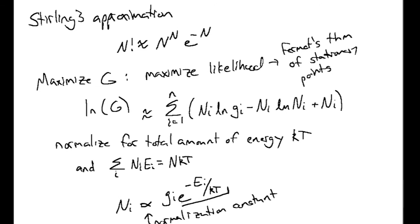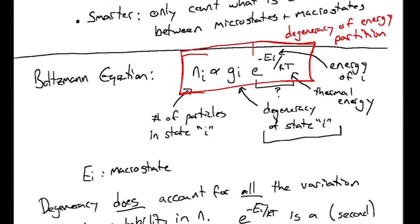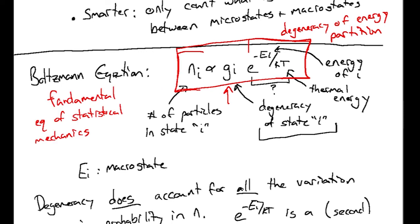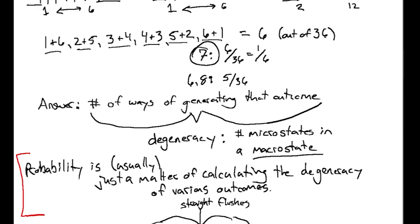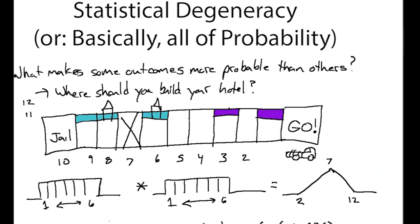Critically, this exponential e^(−E_i/kT) came from Stirling's approximation — it approximates the number of reconfigurations of an energy partition as an exponential. So in the Boltzmann equation, you end up with two degeneracy terms: one for the energy partition itself (the exponential), and one for the particular particle configurations in state i (g_i). This shows that the Boltzmann equation — one of the fundamental equations of statistical mechanics — all boils down to degeneracy. And that's statistical degeneracy.